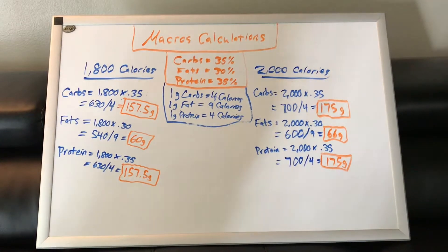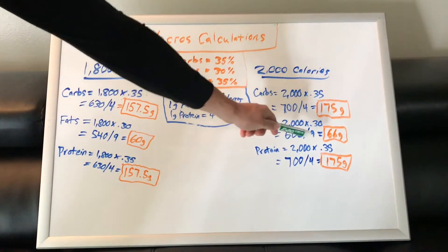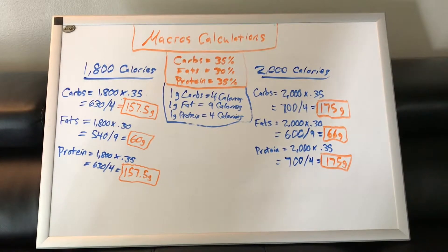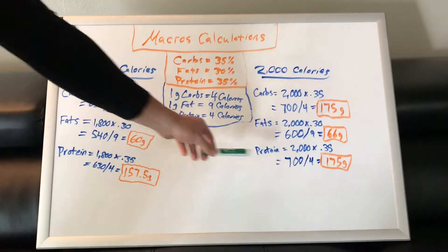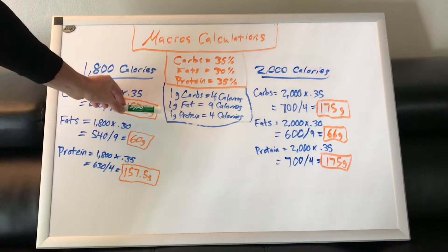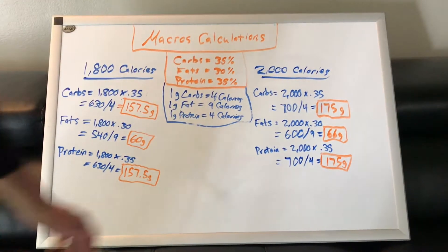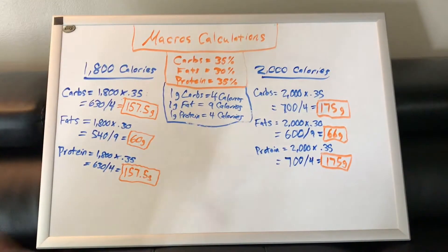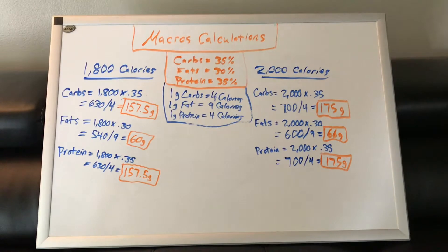And then for protein, you're going to do 2,000 times 0.35, which is 35% of your daily intake. And that will come out to 700 calories. Since 1 gram of protein equals 4 calories, go 700 divided by 4, it's going to give you 175 grams per day.